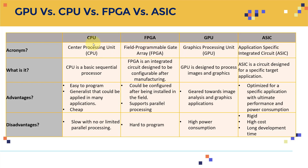Each hardware type has advantages and disadvantages. A CPU is a basic sequential processor — think of it as a generalist. An FPGA is an integrated circuit designed to be configurable after manufacturing. A GPU is designed to process images and graphics, which we've leveraged for training deep learning models. ASICs are circuits designed for a specific target application.